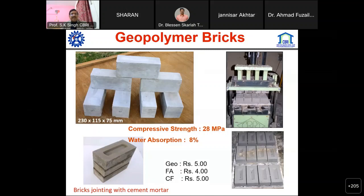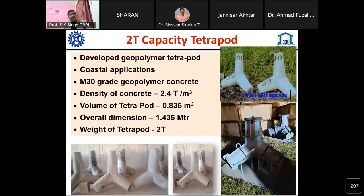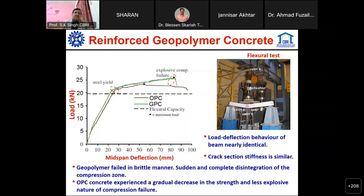The cost of geopolymer bricks is about five to ten percent higher than normal fly ash bricks, which has been a challenge, but they have very high compressive strength and less water absorption. We have developed hollow blocks, geopolymer cellular concrete with a density of 800 kg/m³ for use as partition walls, and we have done work on tetrapods using geopolymer concrete for coastal environments where it has less effect of chloride and sulfate attack compared to cement concrete.